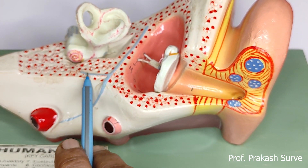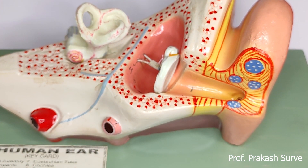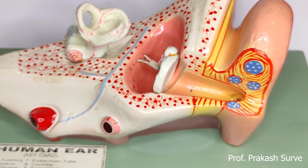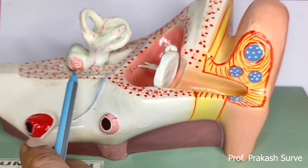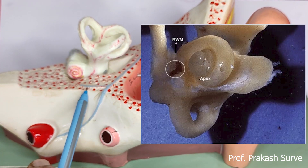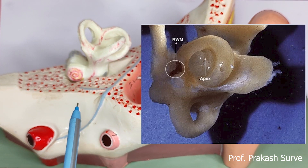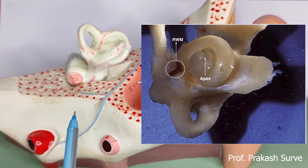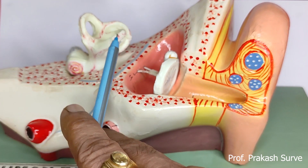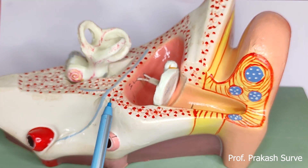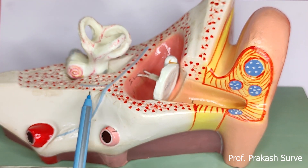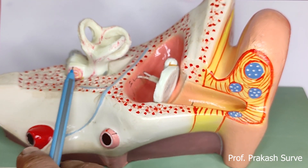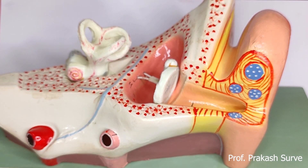The internal ear consists of the labyrinth and the vestibular apparatus. The labyrinth consists of the bony labyrinth and the membranous labyrinth, which are filled with perilymph and endolymph respectively. The coiled portion of the labyrinth is called the cochlea.